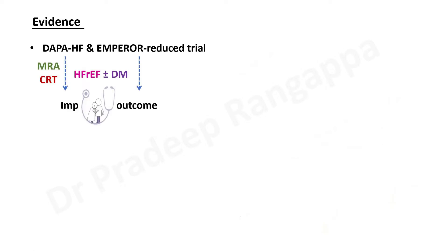For intensivists, it's important to note the key studies — there are many studies on these drugs, mainly in heart failure. The two landmark studies are the DAPA-HF study and the EMPEROR-Reduced trial. DAPA-HF used Dapagliflozin and EMPEROR used Empagliflozin. These drugs were studied in patients with heart failure with reduced ejection fraction, either with or without diabetes — something interesting for all intensivists to note. Both studies were conducted in diabetic and non-diabetic patients to see whether these drugs are helpful in heart failure.